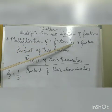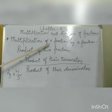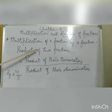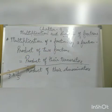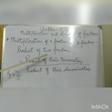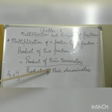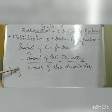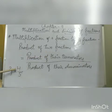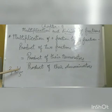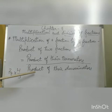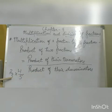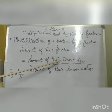Earlier we studied multiplication of a fraction by a whole number. Now we multiply a fraction with another fraction. The formula for the product of two fractions is: product of their numerators upon product of their denominators. For example, 2/3 multiplied by 4/5 — the numerators are 2 and 4, so we multiply them; and the denominators are 3 and 5, so we multiply them as well.